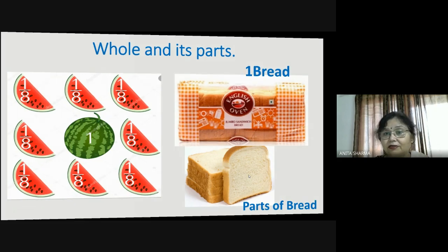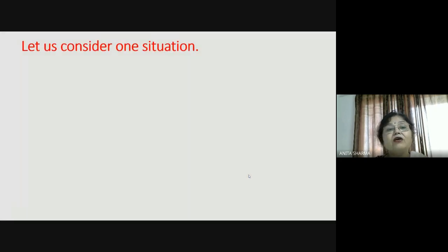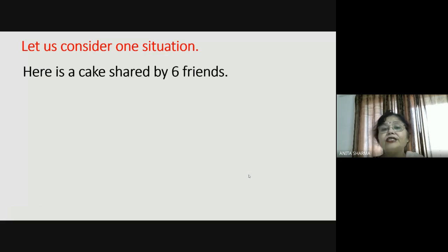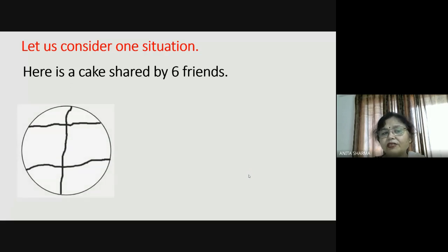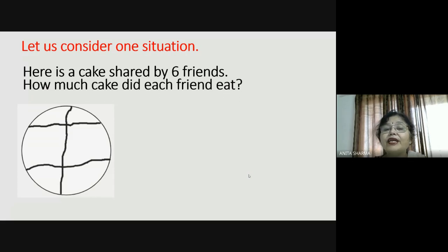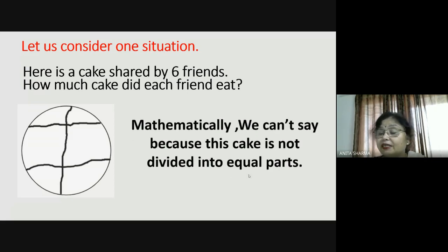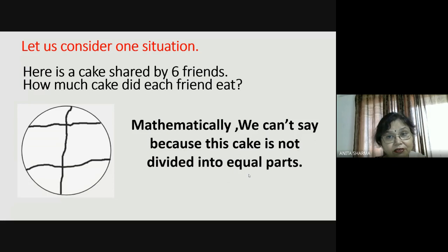I hope the concept is very clear. Now let us understand one situation. Here is a cake shared by six friends. Just see — this is the top of the cake. How much cake did each friend eat? Can we just tell how much? Mathematically, we can't say, because this cake is not divided into equal parts. Some parts are small, some parts are big. We can't say.